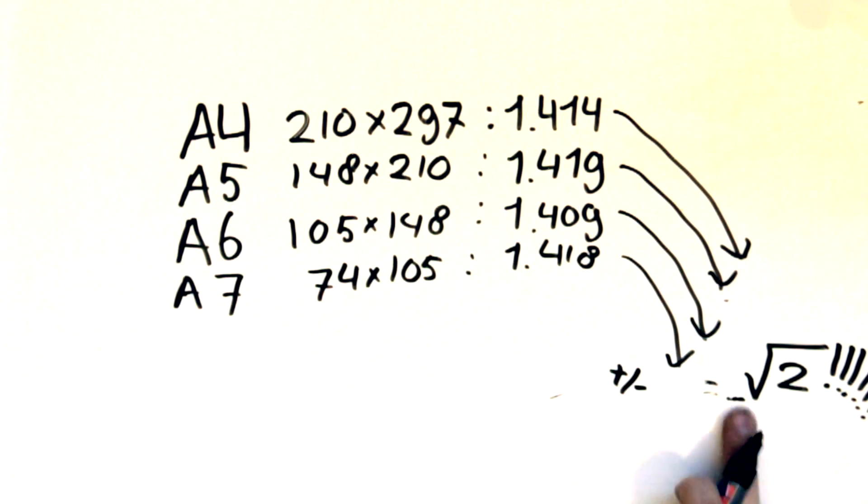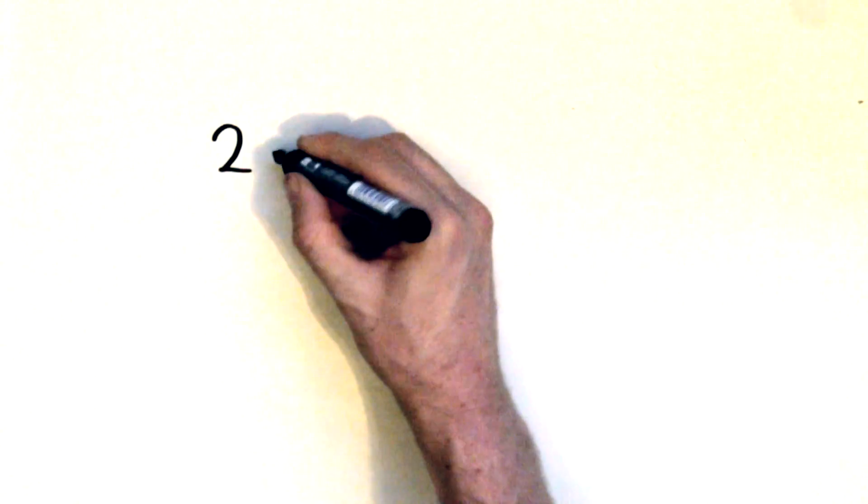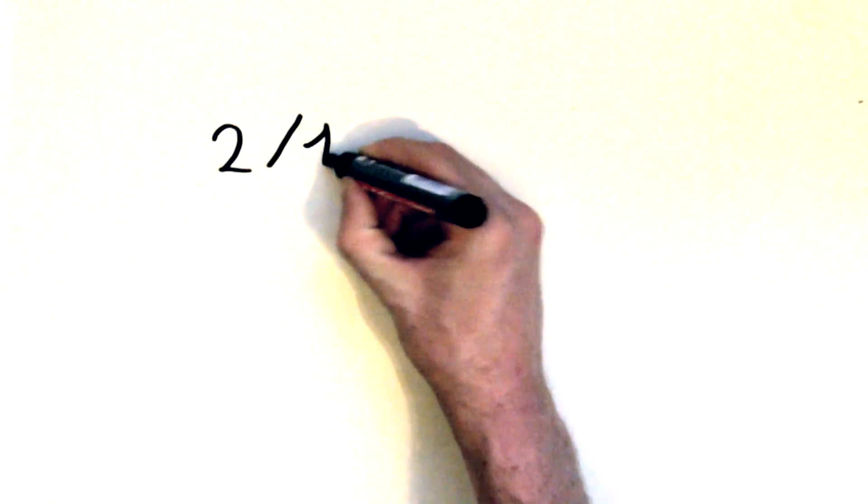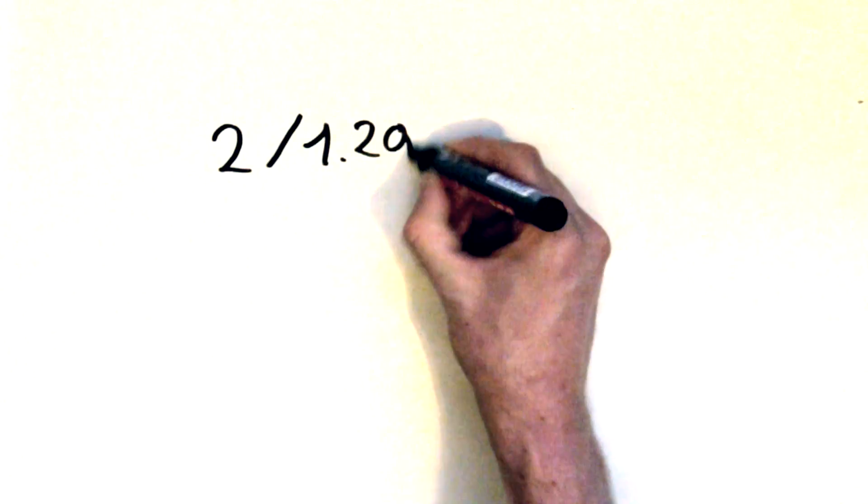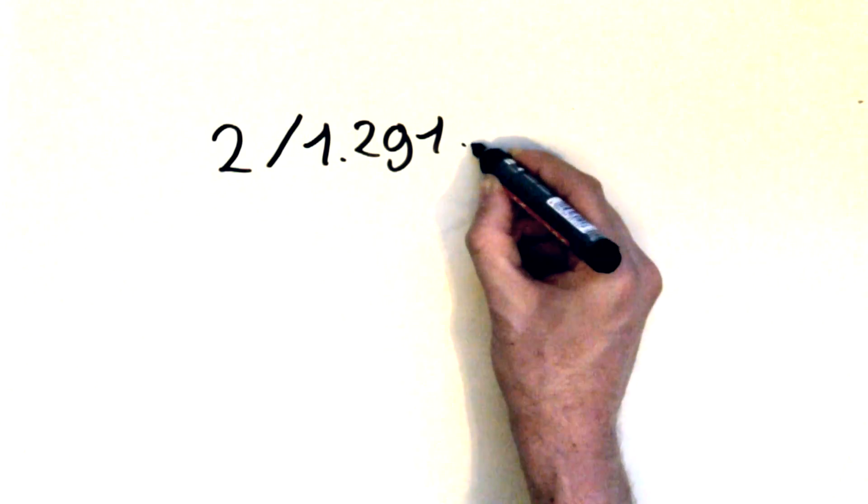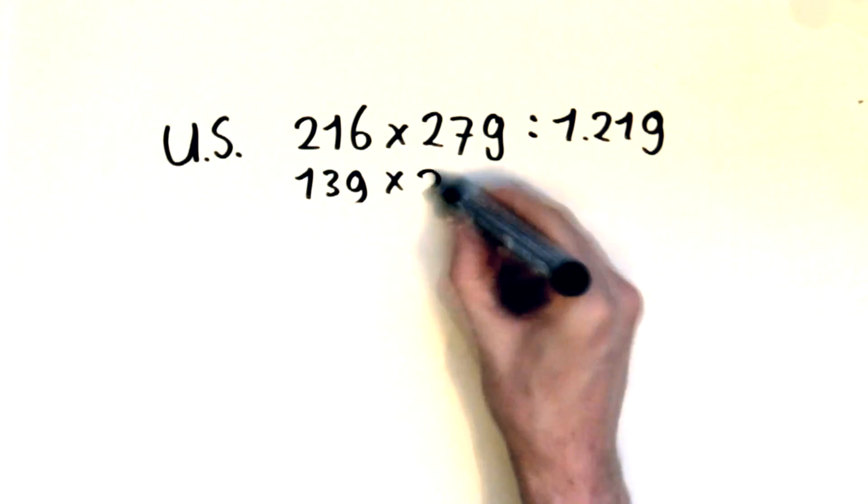So what happens when we do the same for US Letter? Well the aspect ratio of US Letter is 1.291. So we divide 2 by 1.291 and we get 1.549. Yuck!